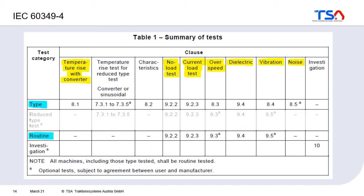As shown in the table, many tests must be performed — especially for the type test. A typical type test can take one to two weeks and is done on one machine of every new design. The routine test must be performed on every machine manufactured, so it is important that it does not take as long.